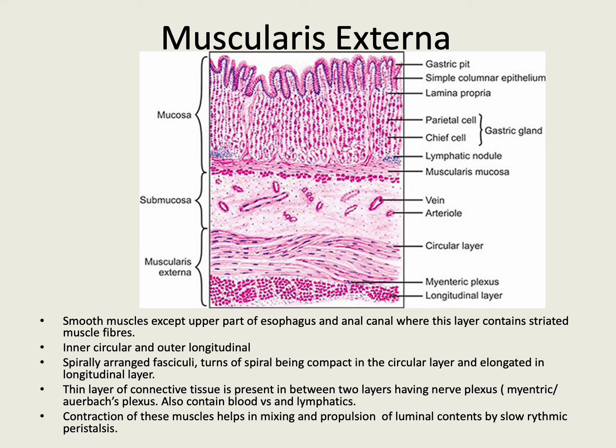The arrangement of muscle fibers shows some variations from region to region. In the stomach, an additional oblique layer is present. In the colon, the longitudinal fibers are gathered to form prominent bundles called the taenia coli. Localized thickening of the circular muscle fibers forms sphincters that can occlude the lumen of the gut — for example, the pyloric sphincter is present around the pyloric end of the stomach, and the internal anal sphincter surrounds the anal canal. A functional sphincter is seen at the junction of the esophagus with the stomach, and the ileocecal valve prevents regurgitation of cecal contents into the ileum.